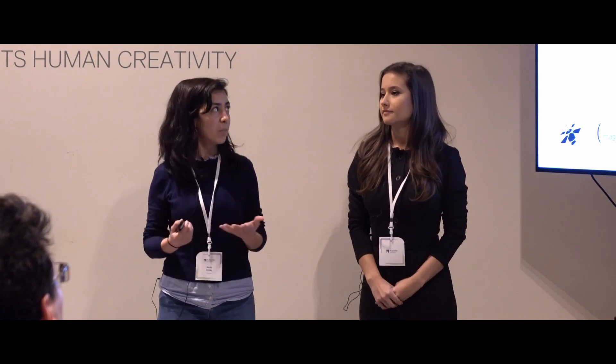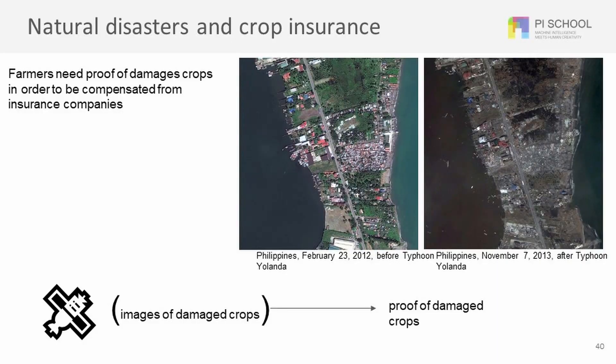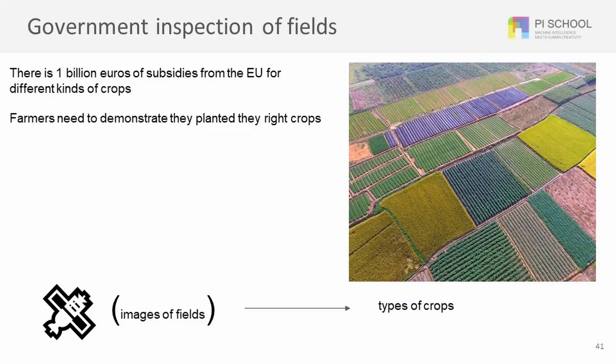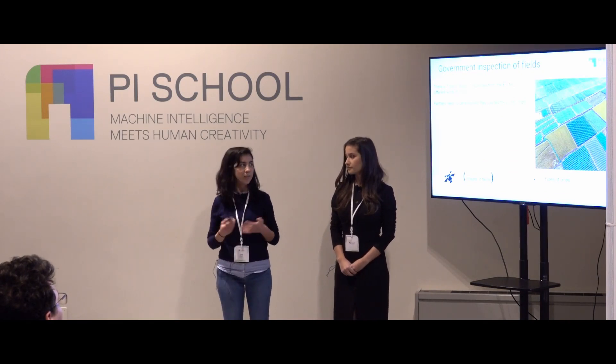Whenever there's a natural disaster, farmers need proof of damaged crops in order to be compensated from insurance companies, so we use satellite images in order to identify damaged crops. The European Union has 1 billion euros of subsidies in order to help farmers, and the farmers need to demonstrate the planted crops, so we use satellite images in order to identify the types of crops.